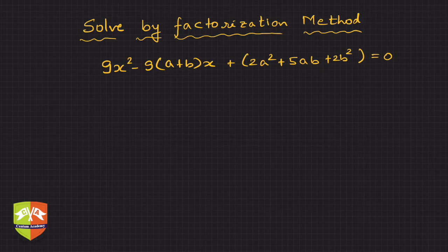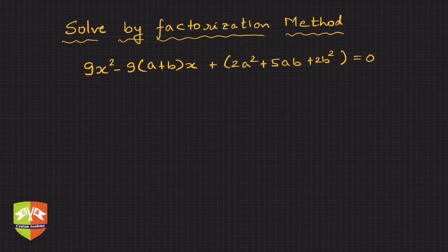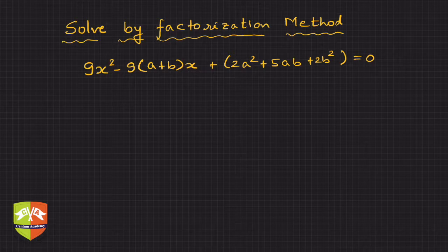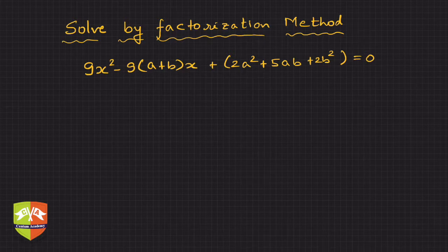In this question we have been asked to solve the given quadratic equation by the factorization method. This is another one of those types where the coefficients are non-numerals. So the methodology we have to use is factorization techniques using algebraic identities, or otherwise to split the middle term.